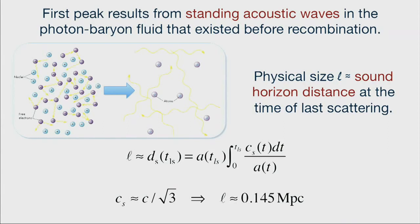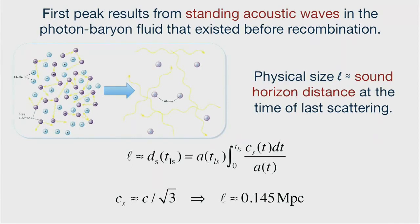When the universe became transparent, regions where the compression was at a maximum have higher energy density and thus higher temperature as seen in the CMB today, while regions at maximum rarefaction are the cool spots. The first peak in the temperature correlation function represents those regions where the photon-baryon fluid had just enough time to reach maximum compression by the time of last scattering and not bounce back — maximum compression and the highest temperature fluctuations.